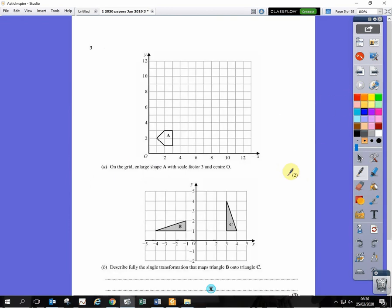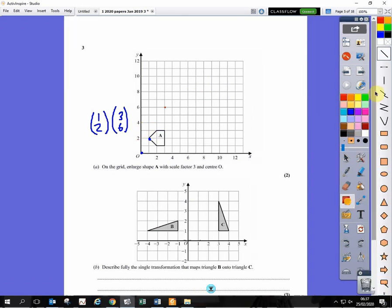Next question. Enlarge this shape by scale factor 3, centre O. You pick a point on the shape. Let's choose this one. The centre is here at 0. How do you get from the origin to this dot here? Well, we go 1 square to the right and 2 up. 1 right, 2 up. And if we enlarge that by scale factor 3, we're going to go 3 squares to the right and 6 squares up, times by 3, times by 3.